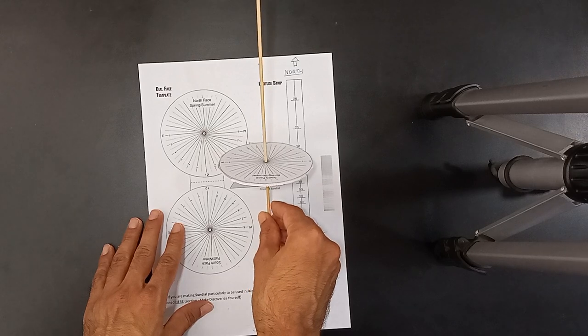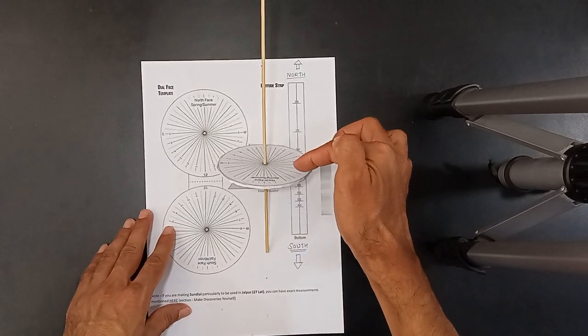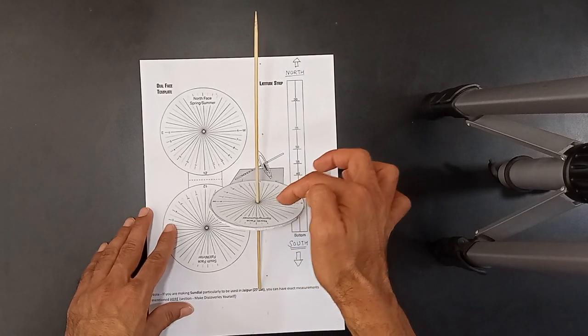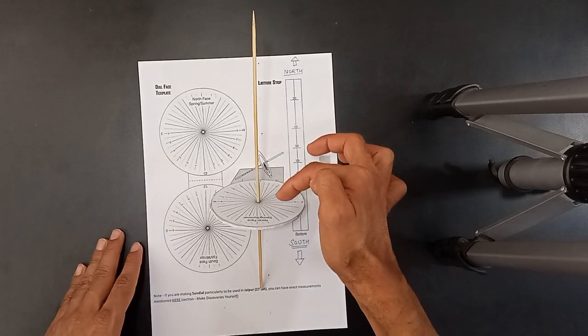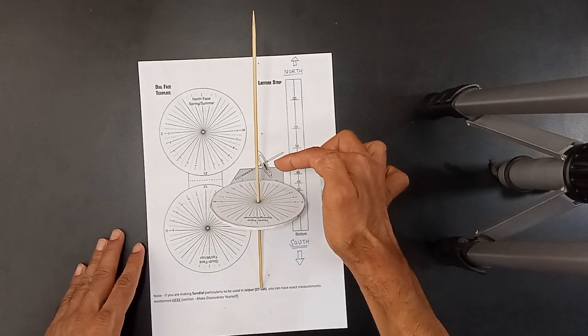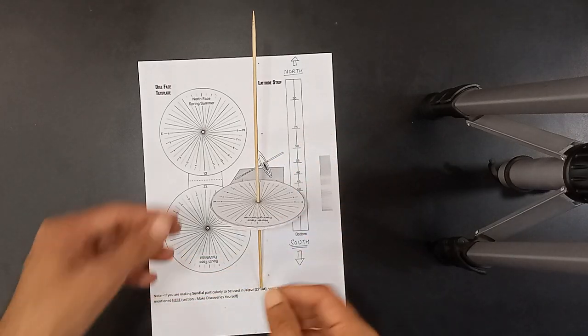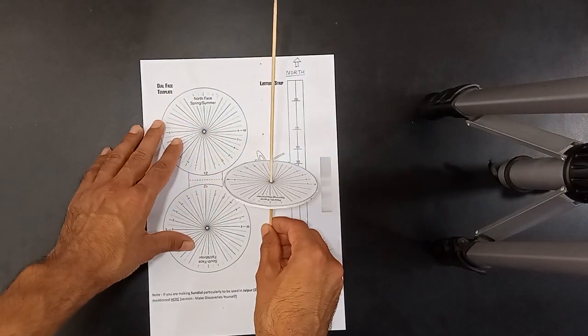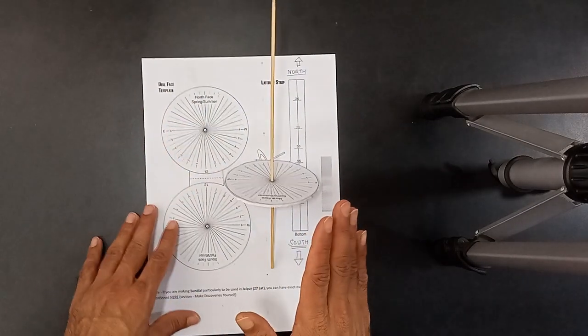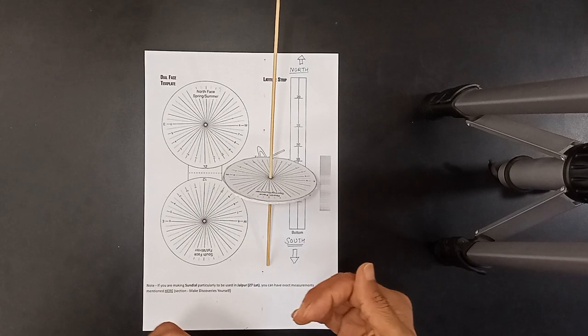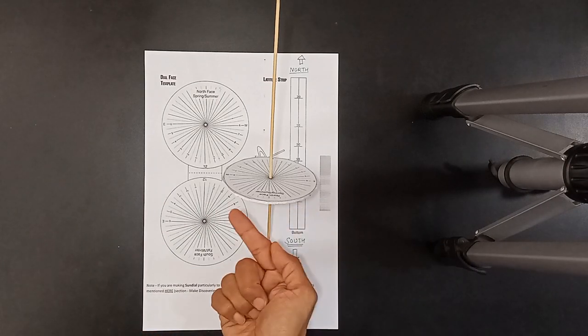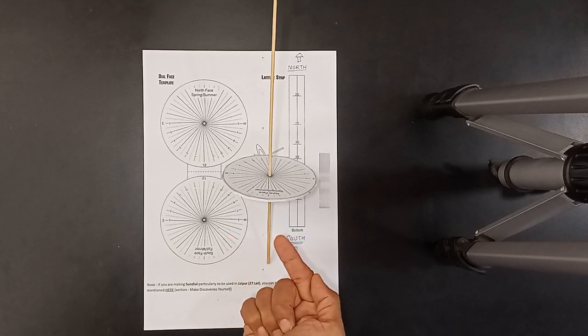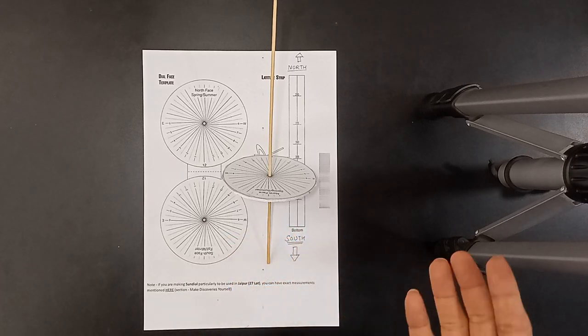One thing you have to understand is the shadow will move through this face, which is the north face, when summers or spring is going on. Once winters or fall hits, you have to use this face. You have to keep it in this way only. You don't need to change the orientation. Once the winter comes in, the shadow will automatically be seen on this face, the one which is towards the south, automatically. Right now summers are coming up, you need to use this face.